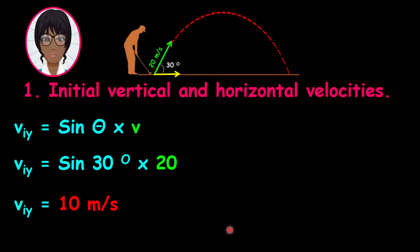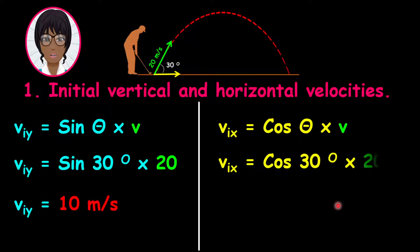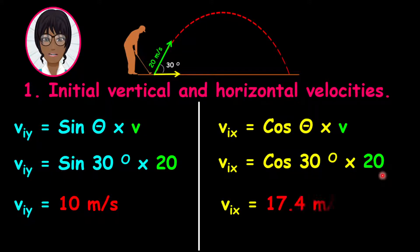Now let us calculate the horizontal initial velocity. Remember that the horizontal initial velocity, or the x component, equals the cosine of the angle multiplied by v. Therefore, the horizontal initial velocity equals cosine 30 degrees multiplied by 20, which gives us 17.4 meters per second.